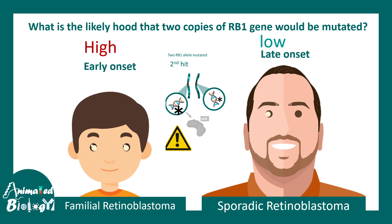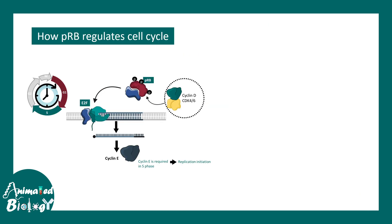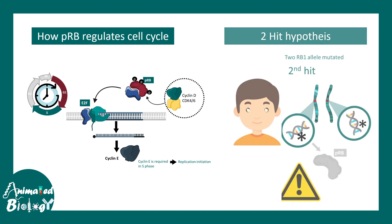The likelihood of getting cancer is higher in familial retinoblastoma compared to the sporadic form. In this video, we learned how PRB regulates the cell cycle by modulating cyclin E expression and holding E2F captive, and we examined the two-hit hypothesis, which states that two mutations are required for most genes to create a phenotypic outcome.